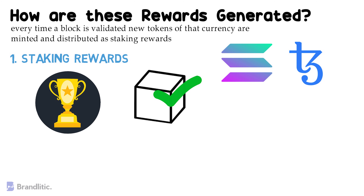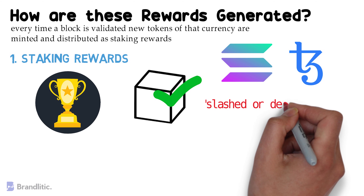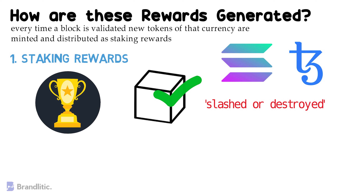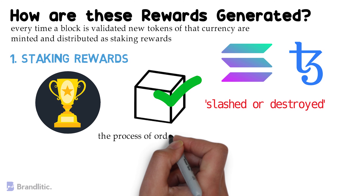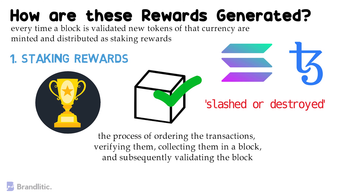Similarly, in case your node is unresponsive or misaligned — for example, double-signing — a portion of your node's assets and hence your assets can get slashed or destroyed. The staking rewards are thus an incentive for these nodes to perform the process of ordering transactions, verifying them, collecting them in a block, and subsequently validating the block.